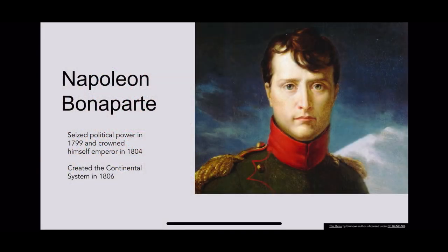Napoleon Bonaparte seized political power in France in 1799 and crowned himself Emperor in 1804. He had created the Continental System in 1806, which was a blockade designed to paralyze Great Britain through the destruction of their commerce.